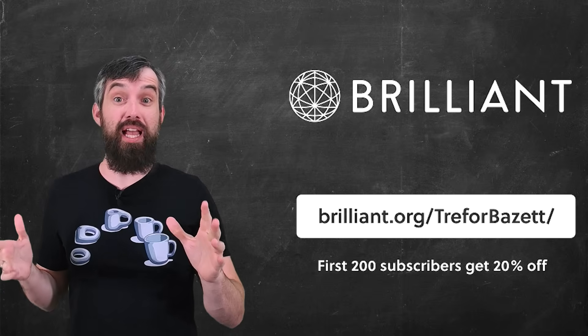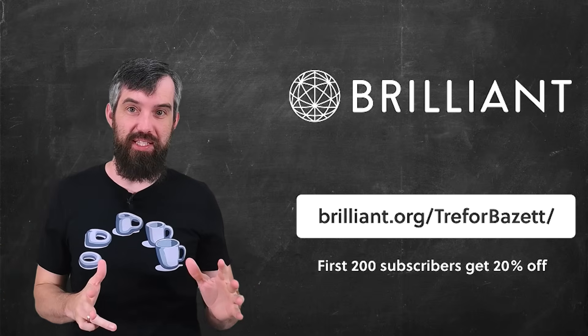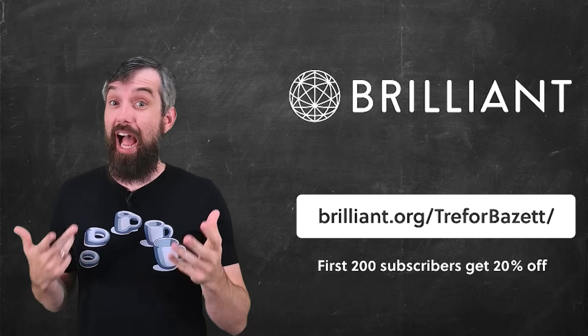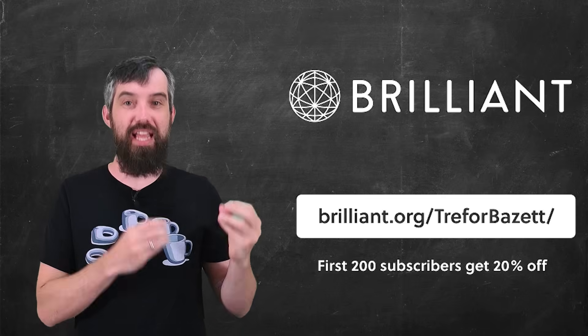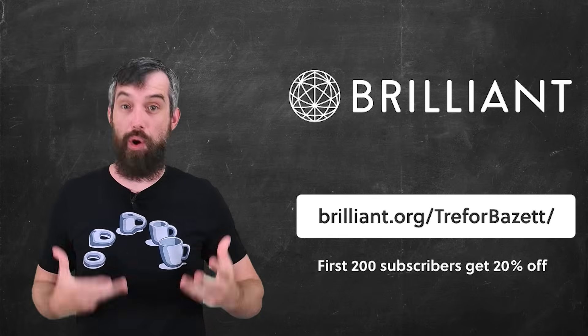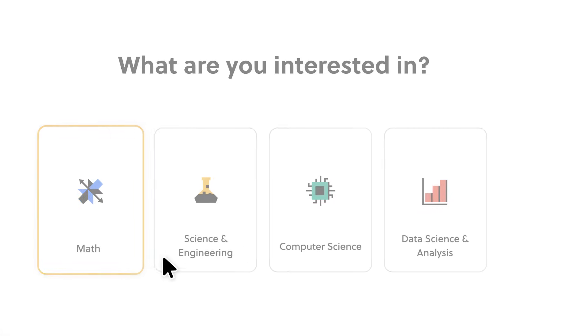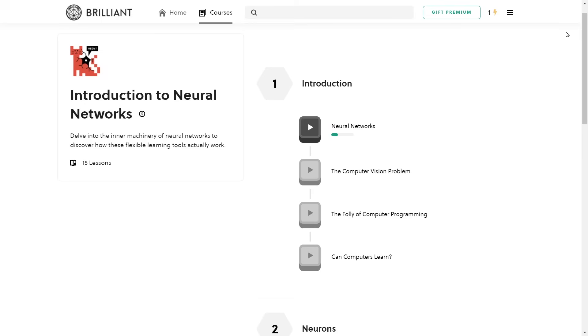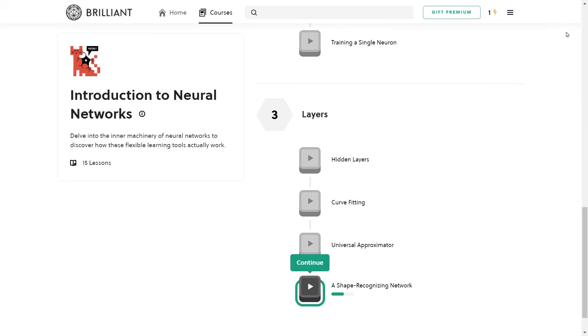Now, Voronoi cells pop up in all sorts of different places, but one of the coolest places they show up is in neural networks. And for that, I'd like to turn to the sponsor of today's video, which is Brilliant.org. While Brilliant has thousands of courses in math, science, and computer science, I've been having a lot of fun going through their course on neural networks.